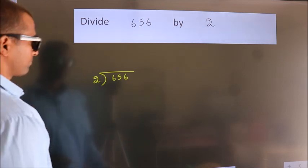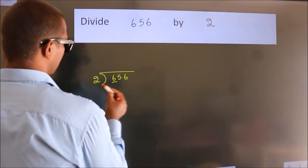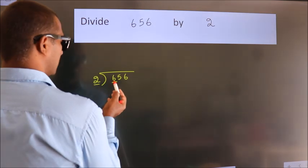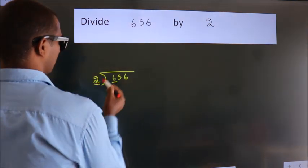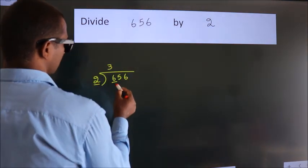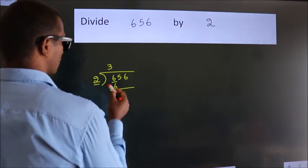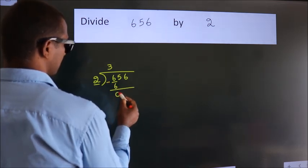Next, here we have 6, here 2. When do we get 6 in the 2 table? 2 threes, 6. Now we should subtract. We get 0.